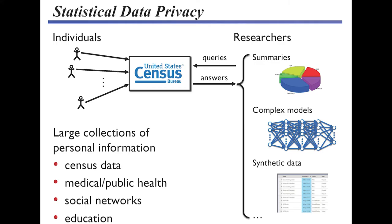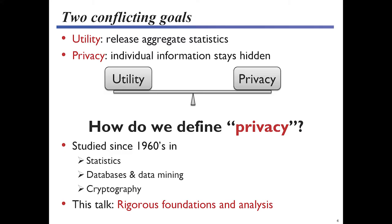This comes up with census data, but large collections of personal information are ubiquitous everywhere else too — public health data, social networks, education, you name it. We're interested in understanding the trade-off between two basic conflicting goals: on one hand, utility — getting as much out of the data as we can — and on the other hand, some notion of privacy. What I'd like to claim is that we understand what it means for the data to be useful much better than we understand privacy.